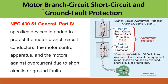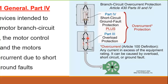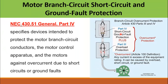For the motor branch circuit short circuit and ground fault protection, here you can see the branch circuit for the motor load. This is the circuit breaker — or it can be a fuse — that will provide the short circuit or ground fault protection. After the contactor there is an overload device which provides overload protection for the motor. So there are two types of protection: first is overload protection, and the other is short circuit and ground fault protection.